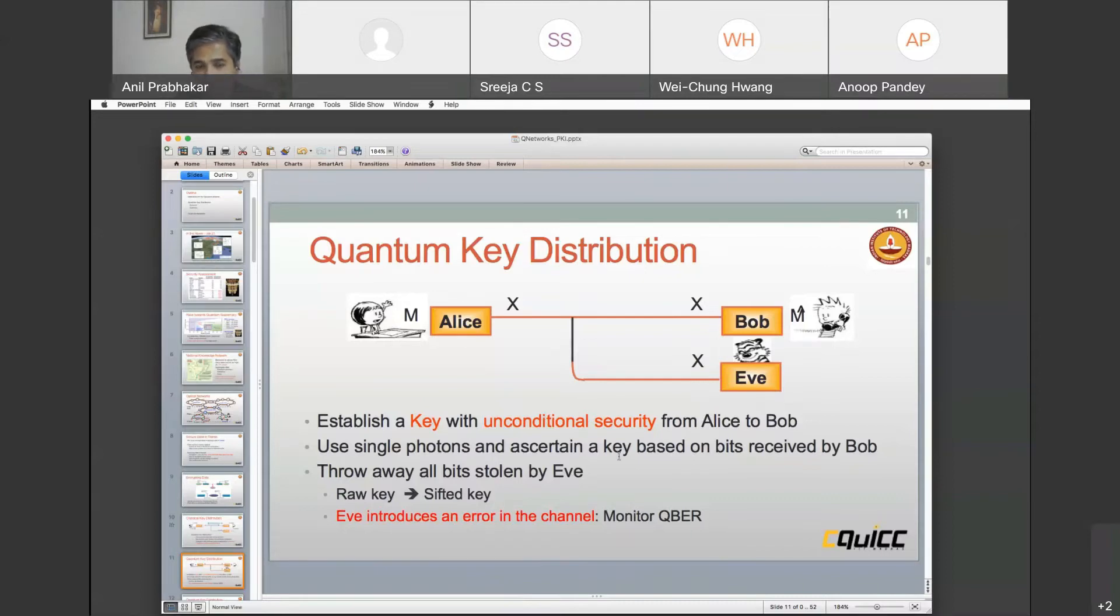The other advantage is that Eve introduces an error in the channel. Every time she tries to do something, I can monitor the channel and say, hey, there's an eavesdropper. In that case, then I don't use the key that was generated and I discard that transaction.